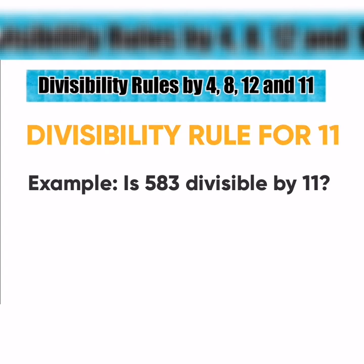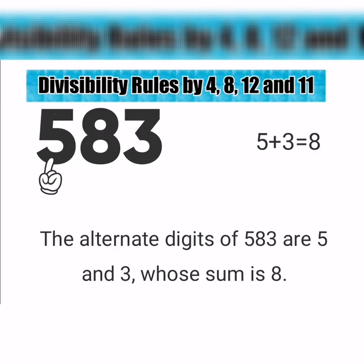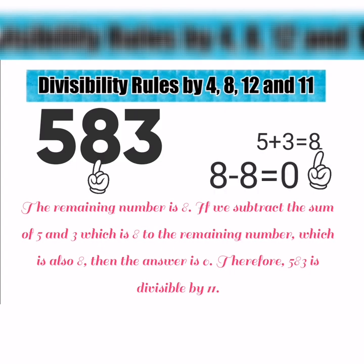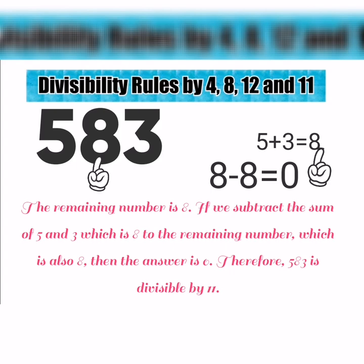Example: Is 583 divisible by 11? The alternate digits of 583 are 5 and 3, whose sum is 8. The remaining number is 8. If we subtract the sum of 5 and 3, which is 8, from the remaining number, which is also 8, then the answer is 0. Therefore, 583 is divisible by 11.